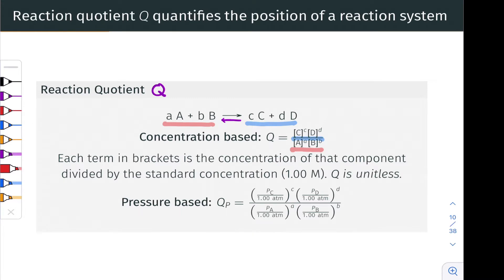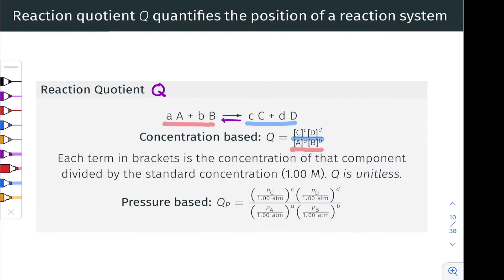This is the value of Q, and we can calculate that ratio for absolutely any chemical reaction system, be it in equilibrium or not — any flask, any sealed vessel in which a reaction is occurring — provided we can get values for all four of these concentrations, we can calculate a value for the reaction quotient Q.